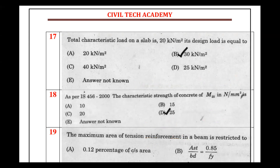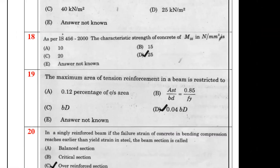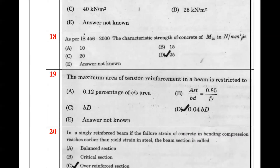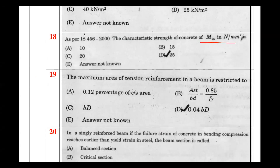The characteristic strength of concrete — M25 is the characteristic strength. This is a basic question. The maximum area of tension reinforcement is 4% of the cross-sectional area.